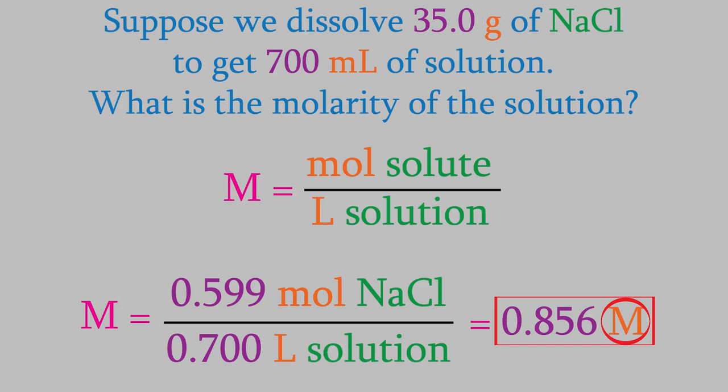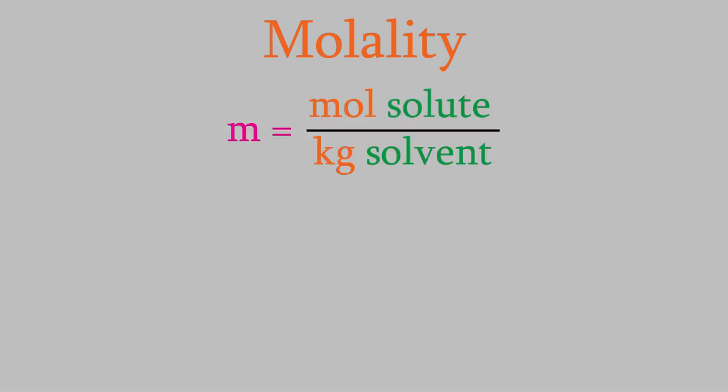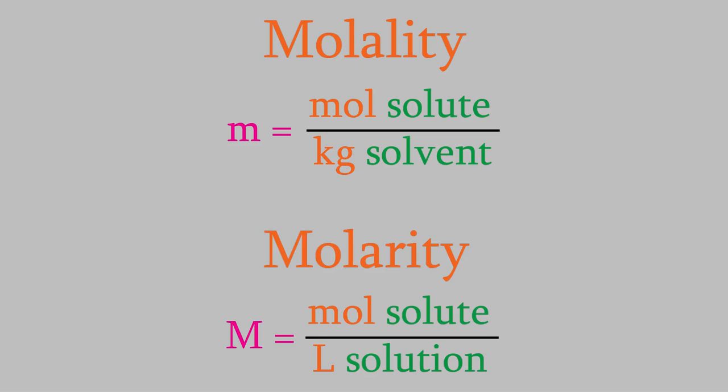Now let's look at some other concentration units. One of these is the molality. The molality is similar to the molarity, but with two important differences. The molality is the moles of solute over the kilograms of solvent. The numerator is the same as in the molarity, but the denominator is different in two ways: first, it's in kilograms; and second, it's kilograms of the solvent only, not the whole solution. That's a common mistake — if you use the kilograms of solution, you will get an incorrect molality.